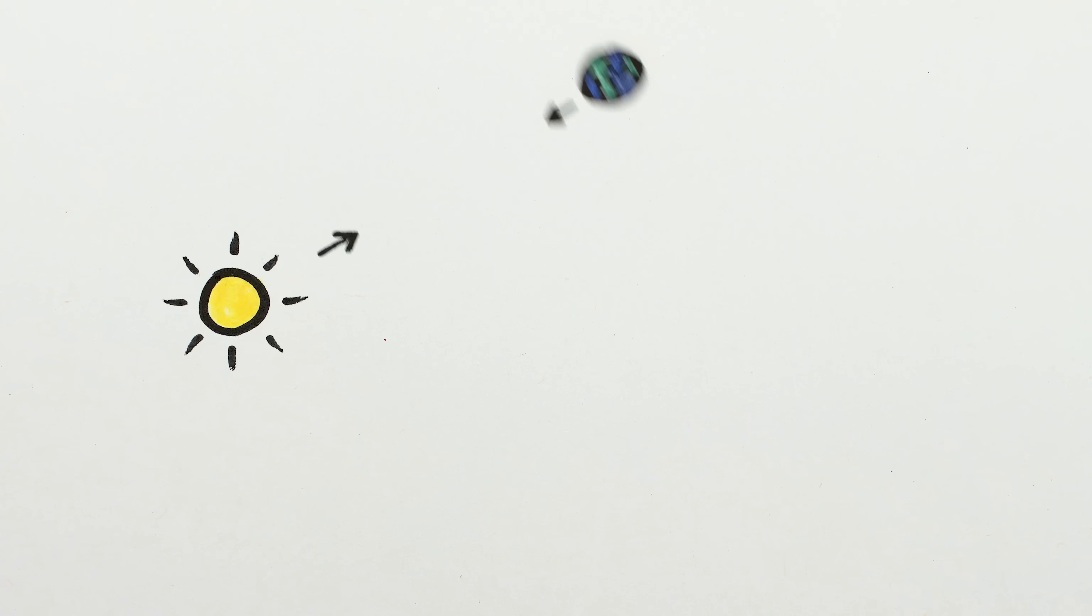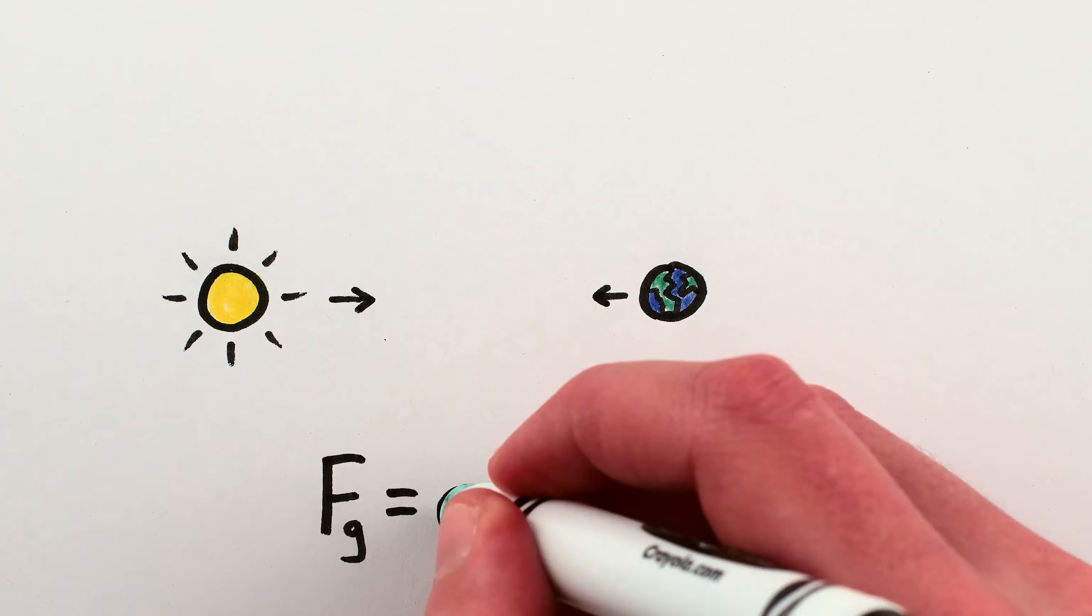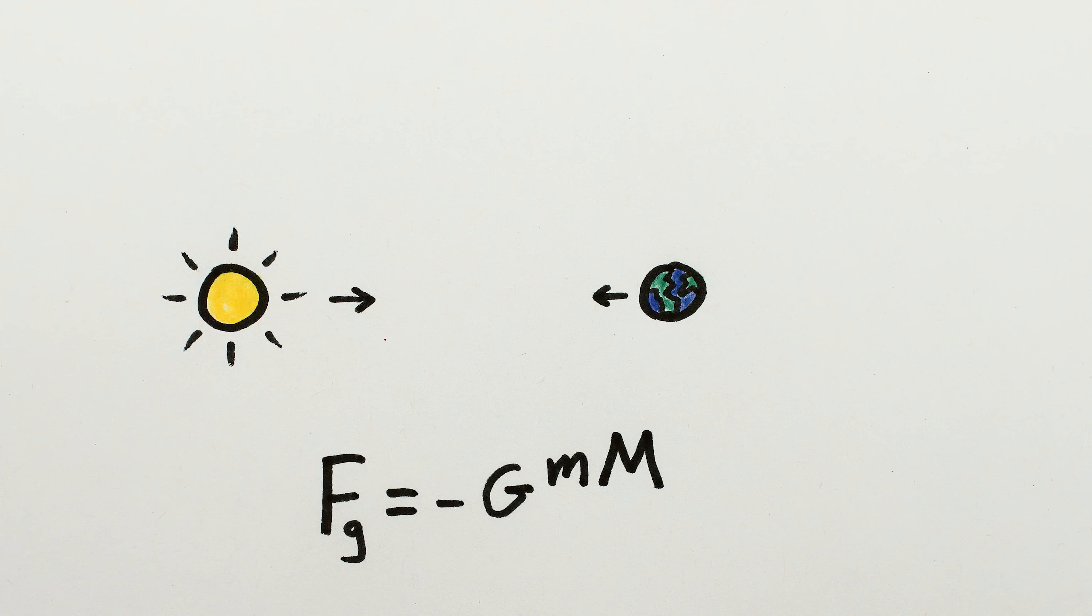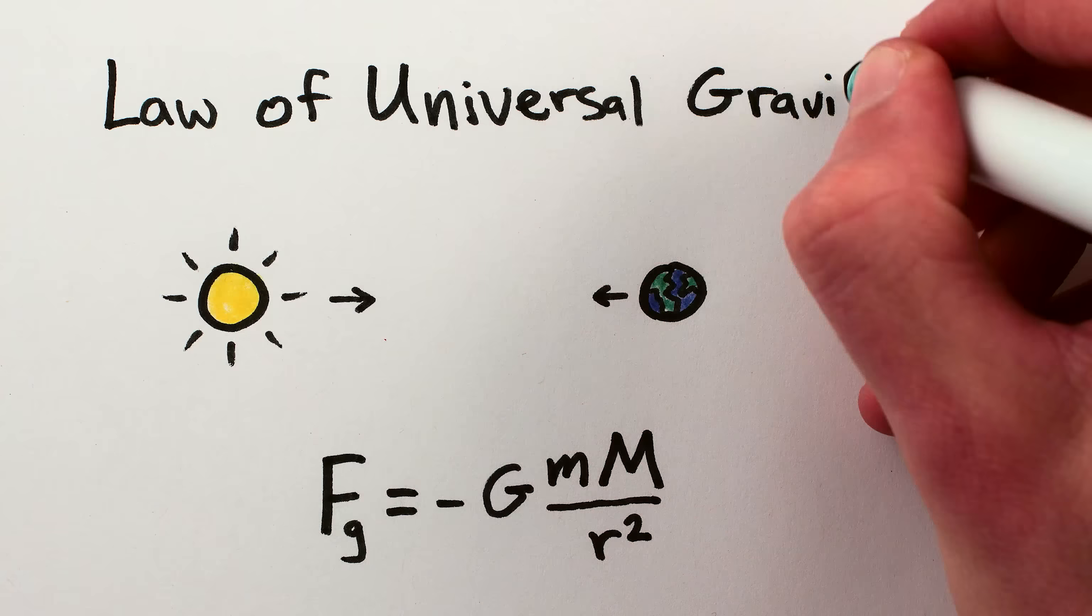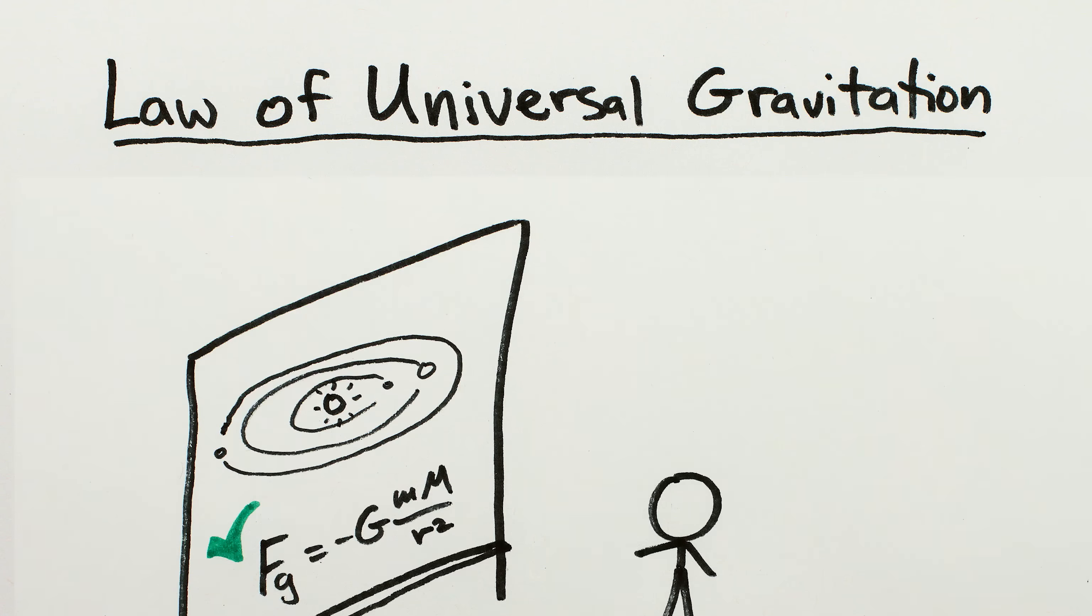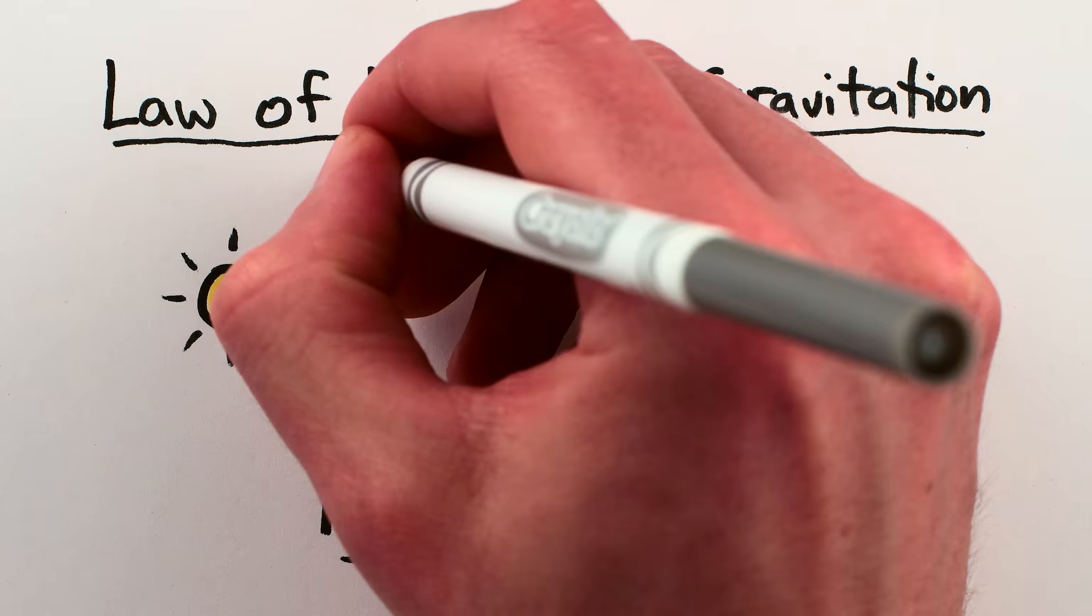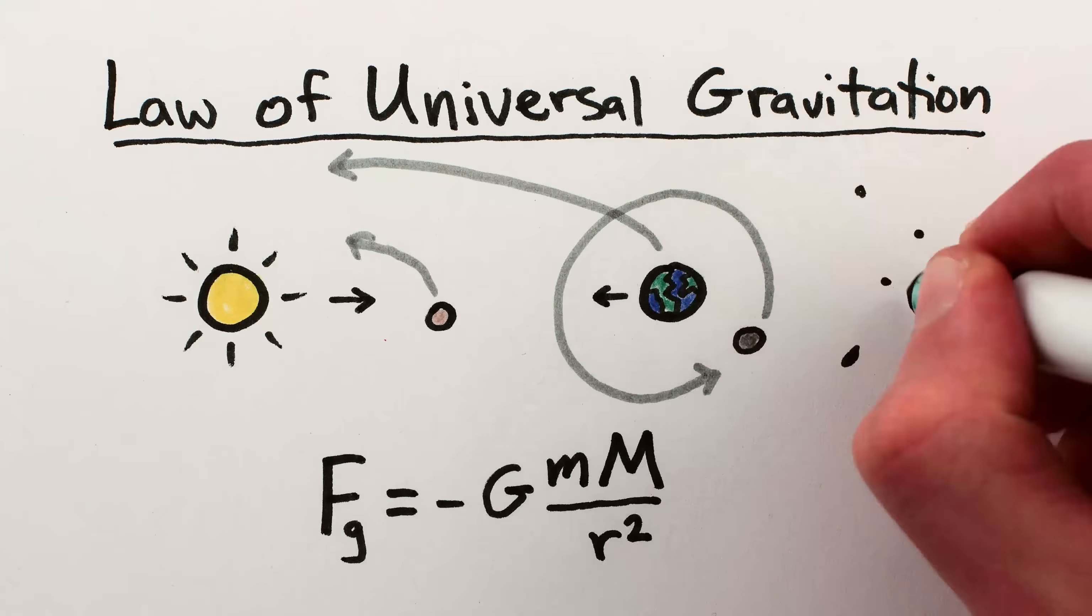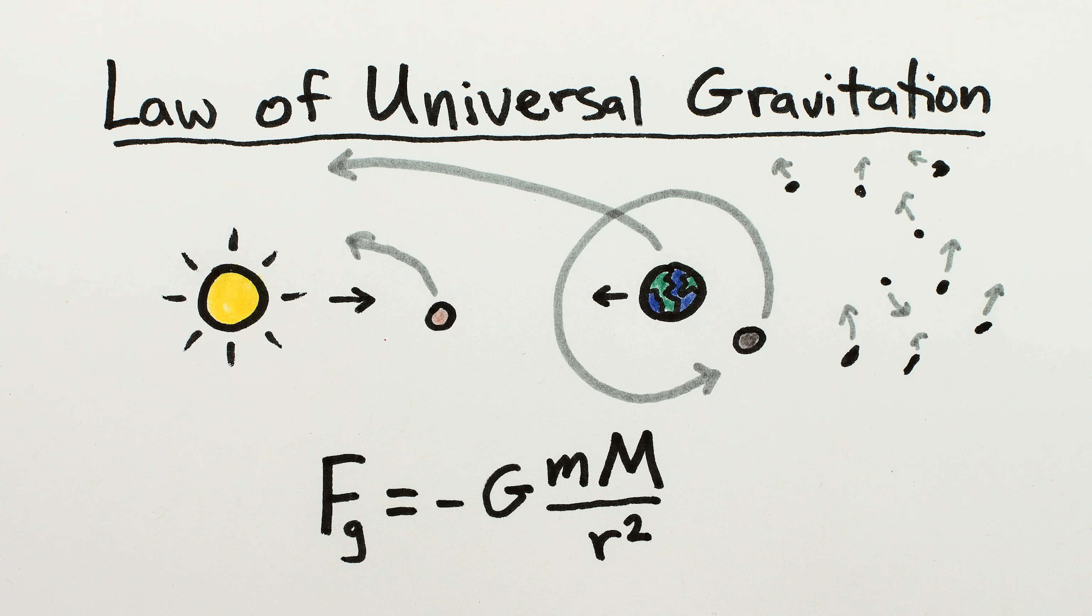It's well known that gravity pulls two objects together with a force proportional to the mass of one times the mass of the other, divided by the square of the distance between them. This equation is called Newton's Law of Universal Gravitation. It's taught to school children the world over and it predicts the motions of the planets and moons and asteroids in our solar system with incredible precision.